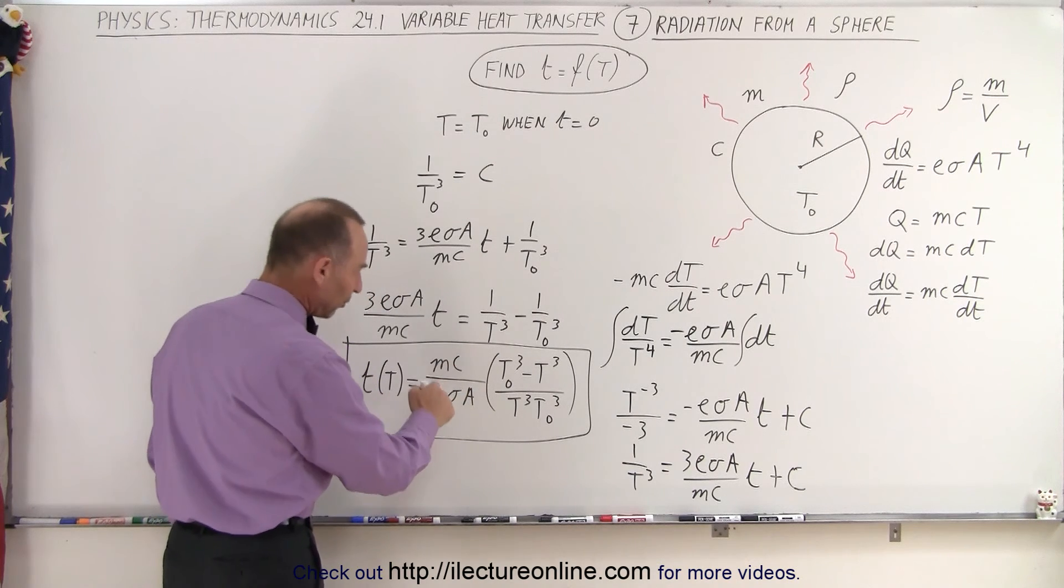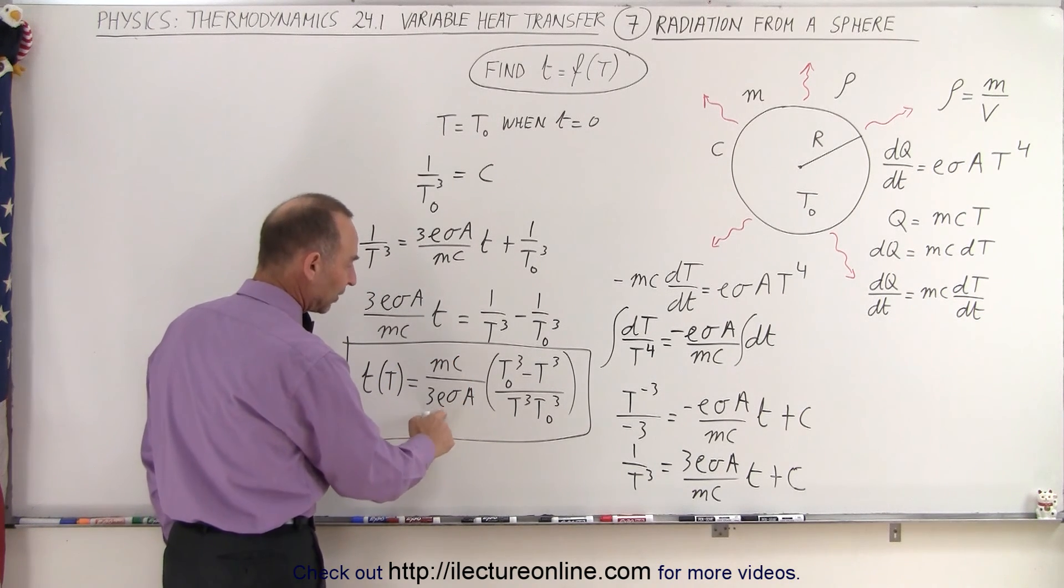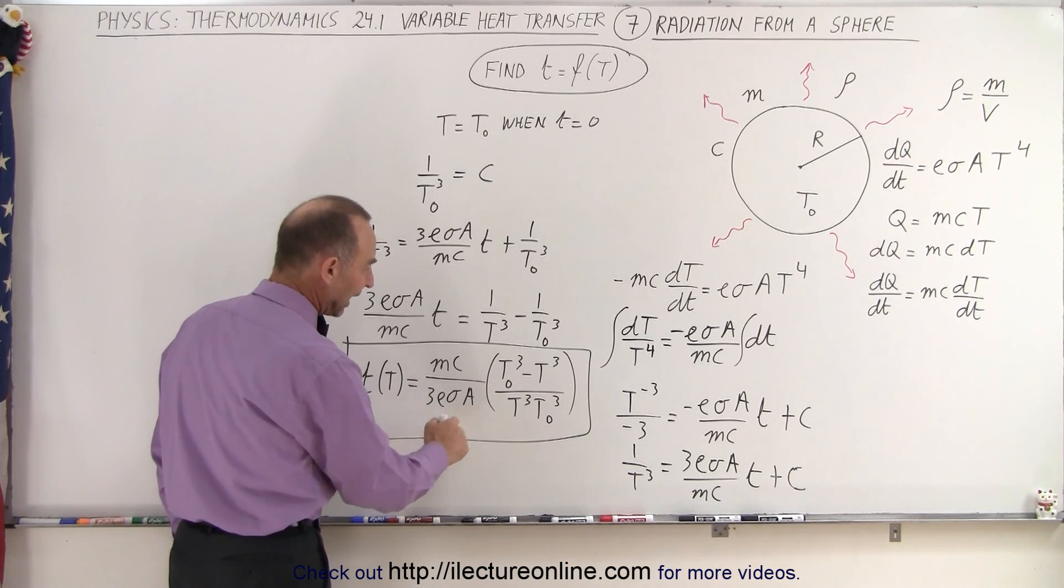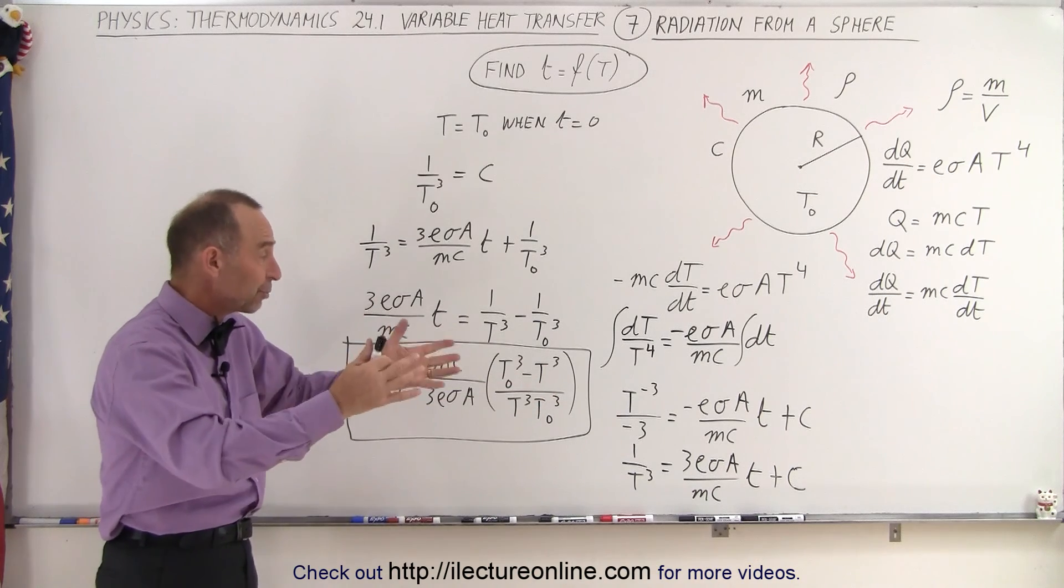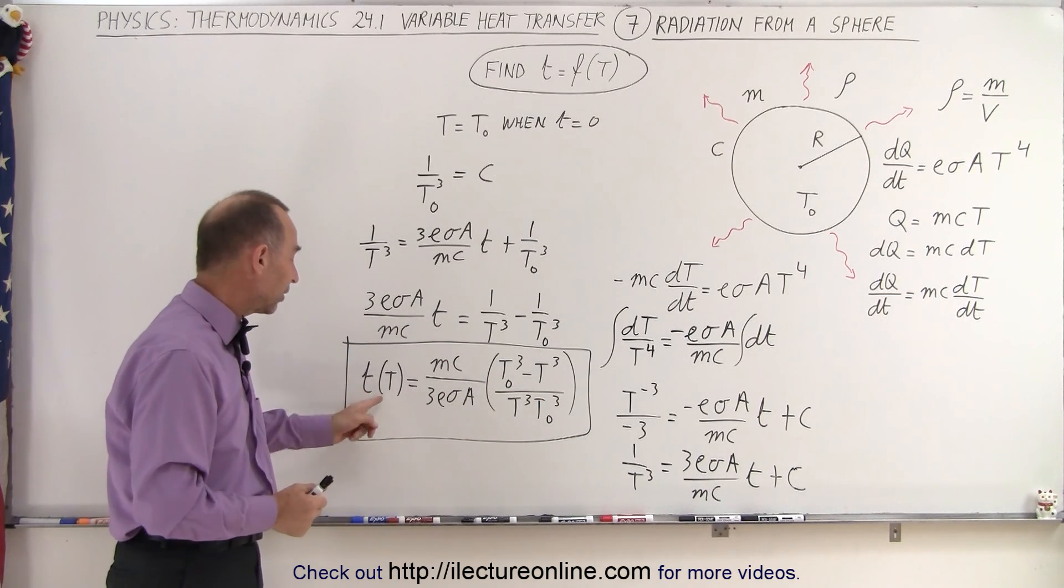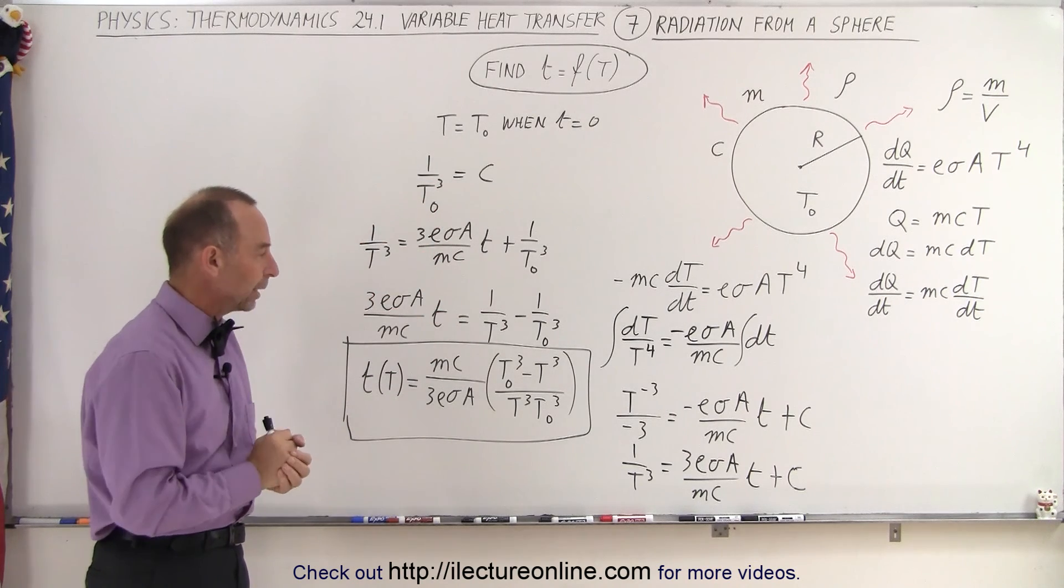Of course we need all these constants. We need the mass, the specific heat constant, the emissivity constant, the Stefan-Boltzmann constant, and the surface area of the object. And of course the temperature here T will be whatever temperature we want it to be to see how long it takes for us to reach that as it's radiating out heat and the object is cooling down.